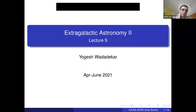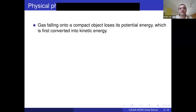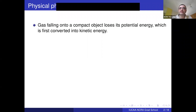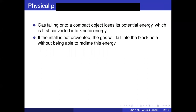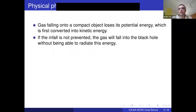We have been talking about the properties of the accretion disk of the supermassive black hole. The gas falling onto a compact object would lose its potential energy, which will first get converted into kinetic energy. If this infalling gas is not stopped, the gas will eventually fall into the black hole and may not radiate energy at all — it will just get accelerated, fall in, and be lost.